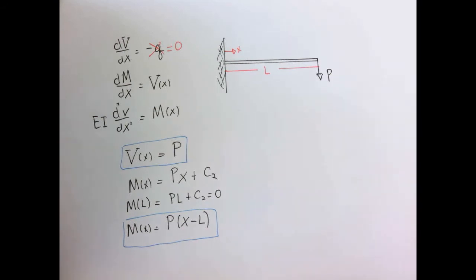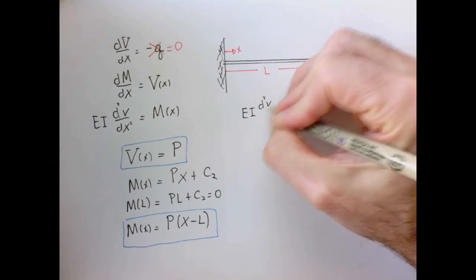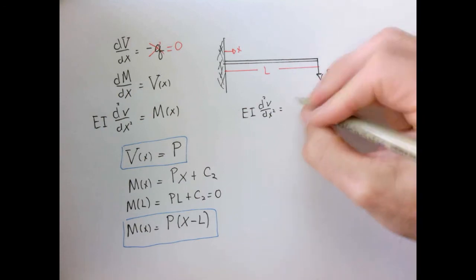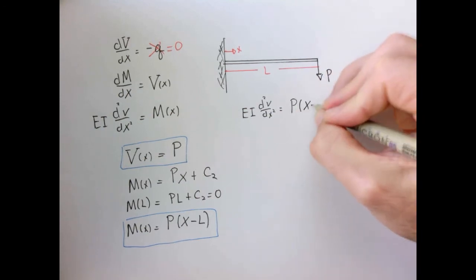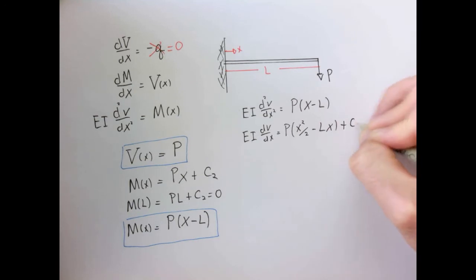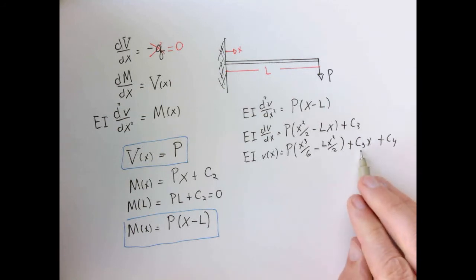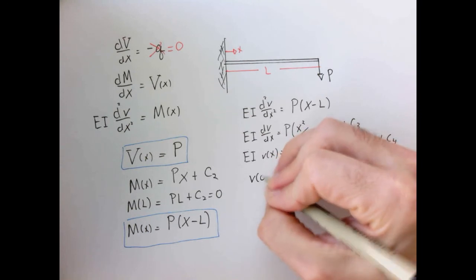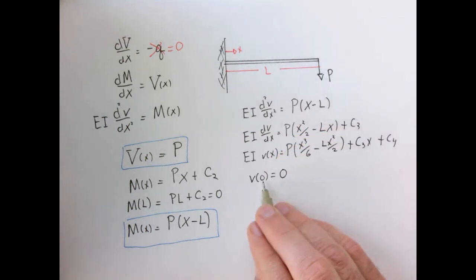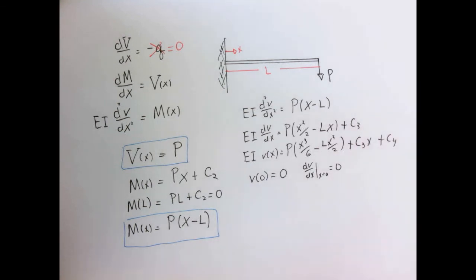Now let's turn to the deflection equation and integrate twice. We have EI times the second derivative of deflection with respect to x equal to the moment, which in this case is P times (x minus L). Integrating twice picks up two new constants of integration, C3 and C4. I can determine those with the same boundary conditions as the last example: deflection at zero equals zero, and the slope evaluated at x equals zero equals zero.